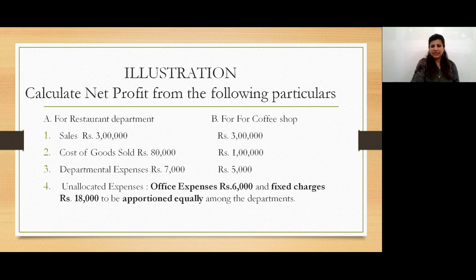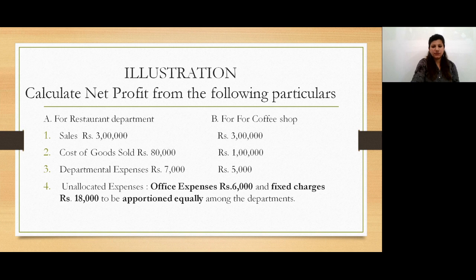Let's take an example. This question is taken from previous year question papers: calculate net profit from the following particulars. Two departments are given — restaurant and coffee shop — with particulars like sales, cost of goods sold, departmental expenses, and unallocated expenses. Office expenses and fixed charges are the unallocated expenses, and they have to be apportioned equally among the departments, meaning the ratio for distribution is 1:1.